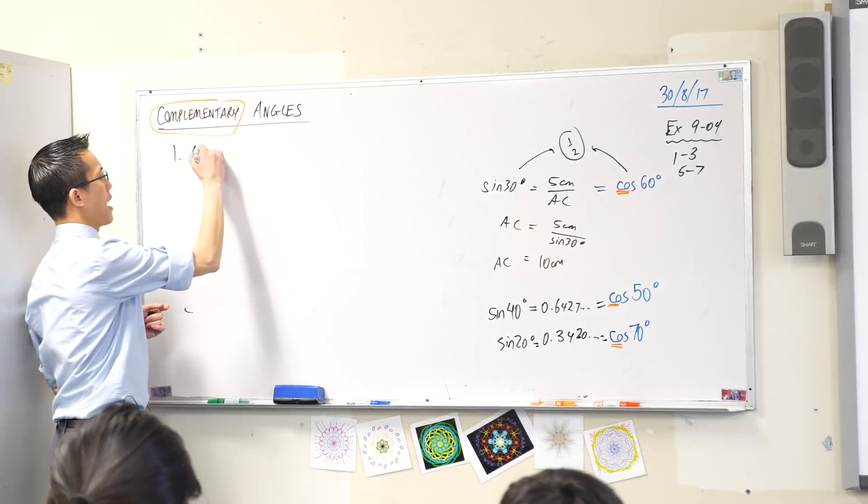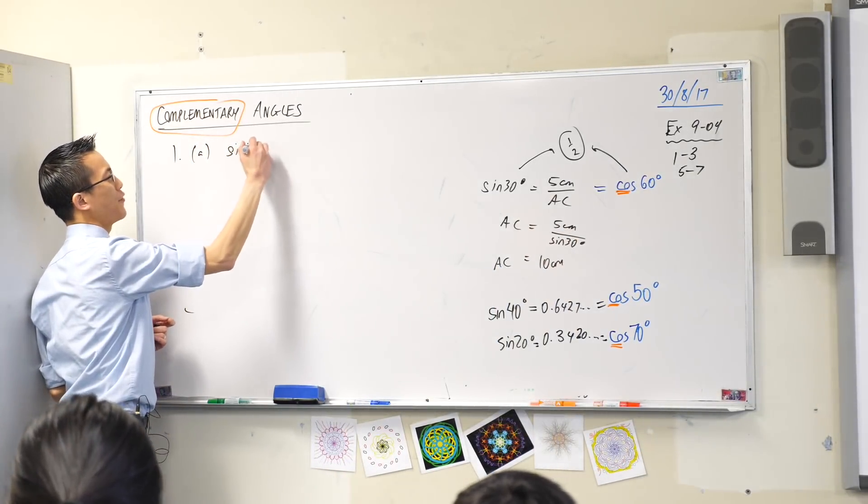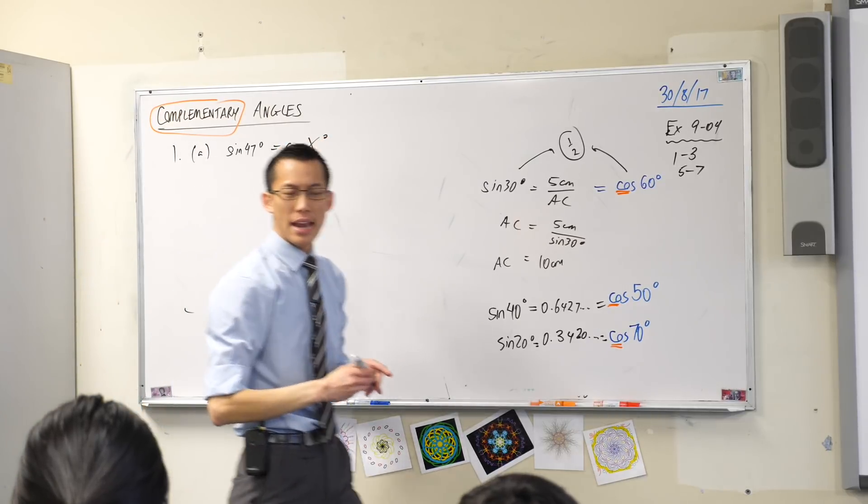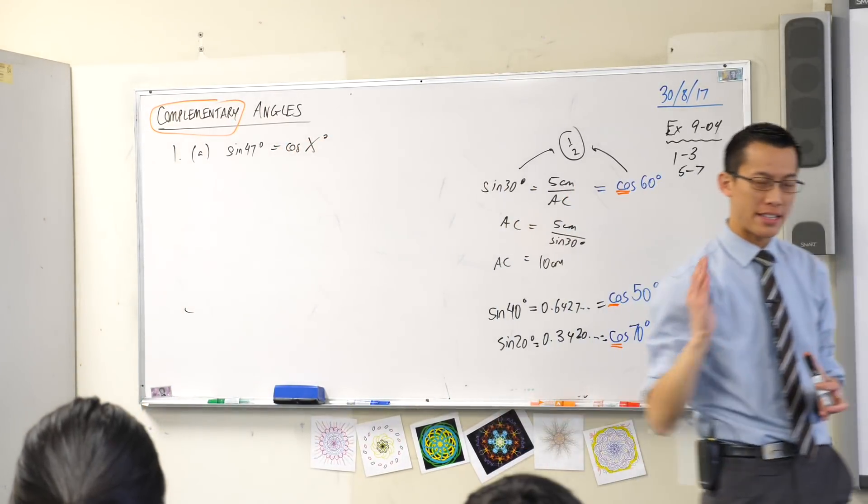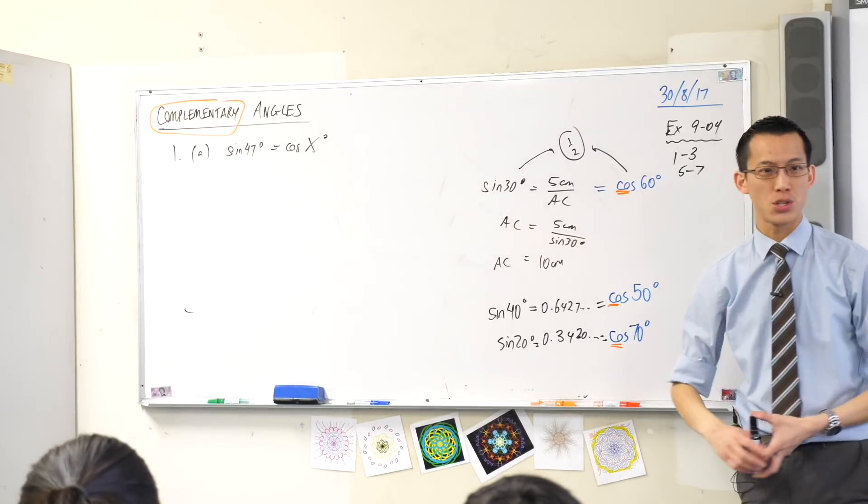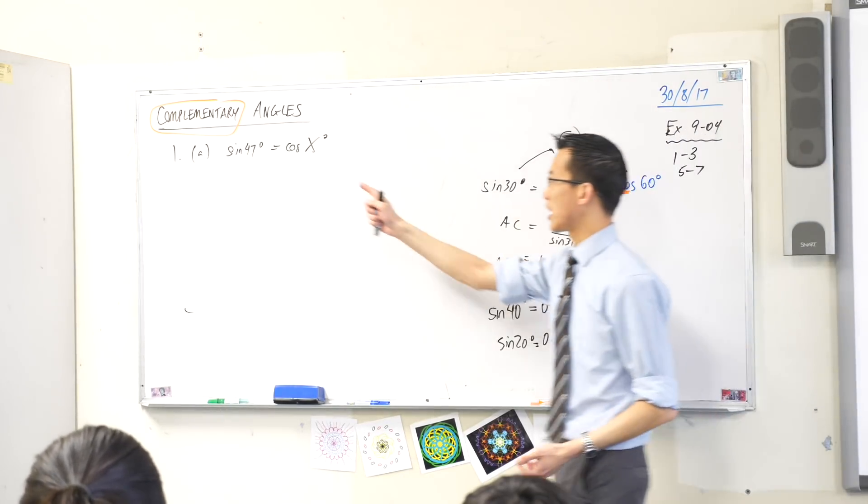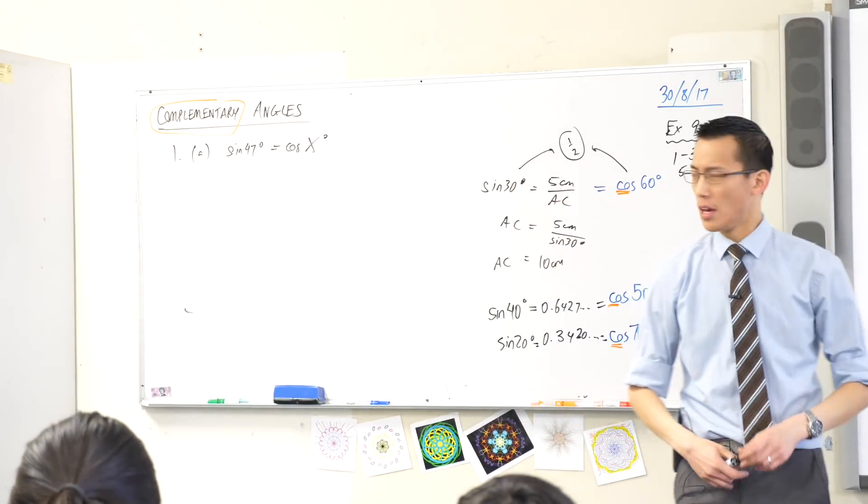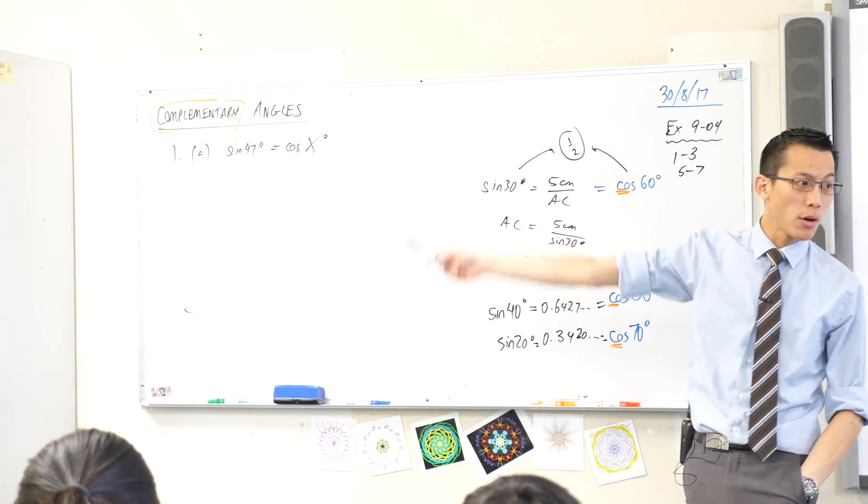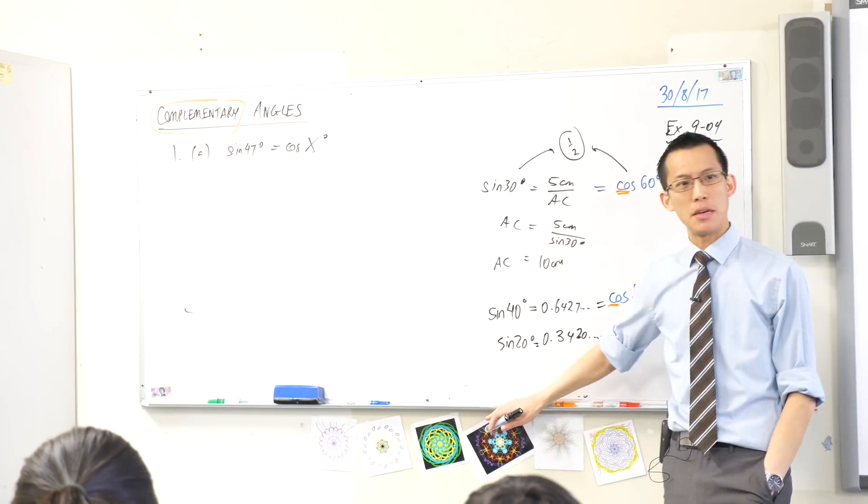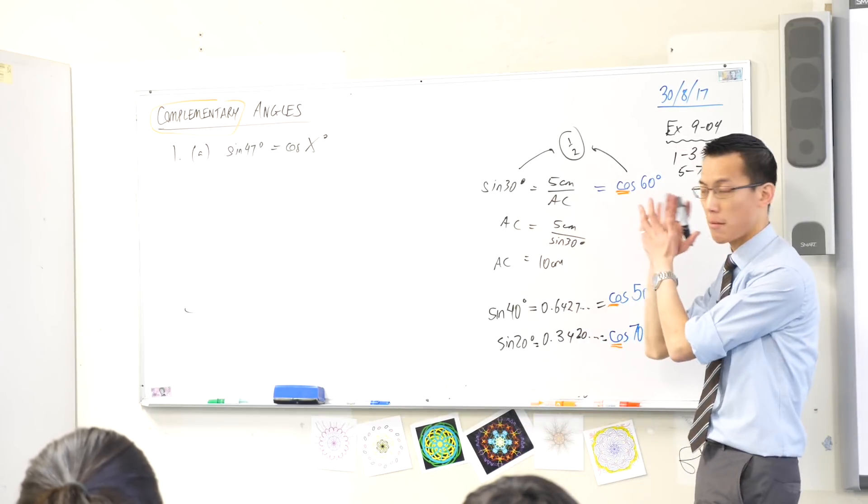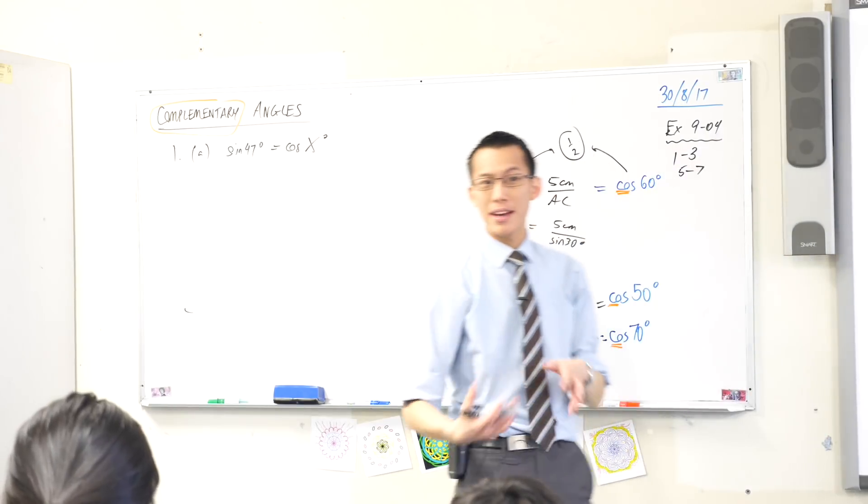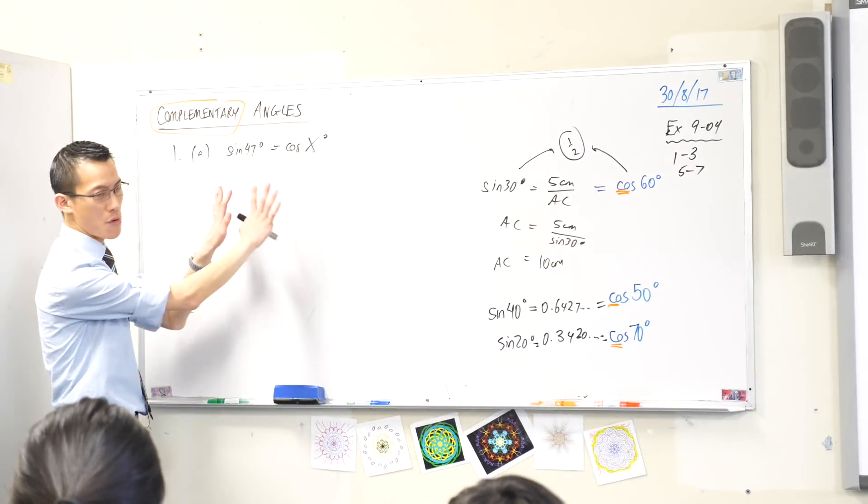Sine, this is 1a. Sine 47 degrees equals cos of x degrees. Now this marks our first foray into thinking about trigonometry without thinking about triangles, because when you have a look at this statement, that 47 degrees doesn't have to be in a triangle at all. There's no diagram, no situation where there's a flagpole or something like that. We're just thinking about these sine, cos and tan on their own terms.